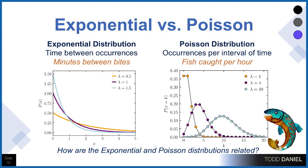I promised I would clarify between an exponential and a Poisson distribution. In the Poisson distribution, the word in French means fish, so I thought maybe a fishing analogy would help. A Poisson distribution is the occurrences per interval of time.